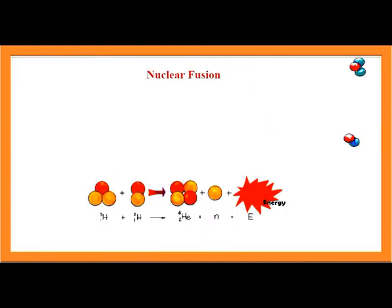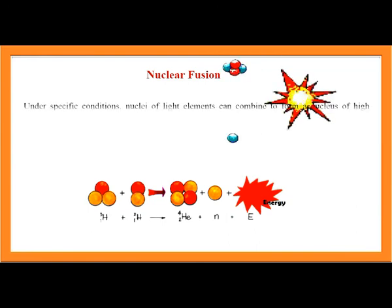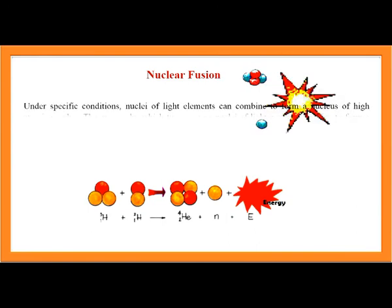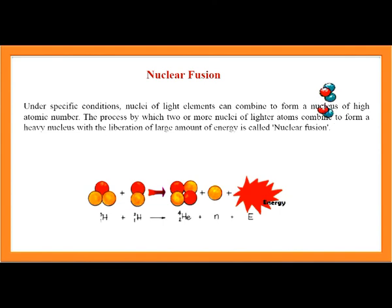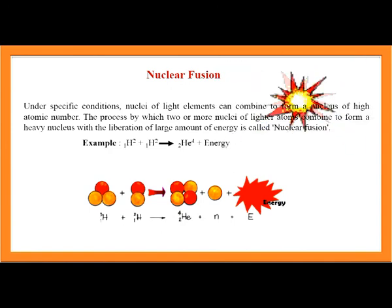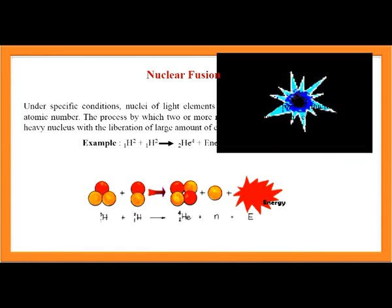Nuclear Fusion: Under specific conditions, nuclei of light elements can combine to form a nucleus of higher atomic number. The process by which two or more nuclei of lighter atoms combine to form a heavy nucleus with the liberation of large amounts of energy is called nuclear fusion. For example, 1H2 + 1H2 → 2He4 + energy.